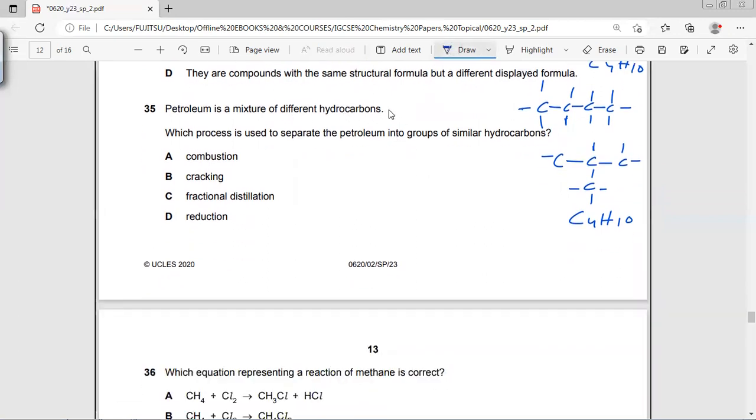Different hydrocarbons and they are in the liquid state. We know that petroleum is a mixture of liquids. If it's a mixture, we can use fractional distillation so that they have different boiling points and they will separate in the distillation column.